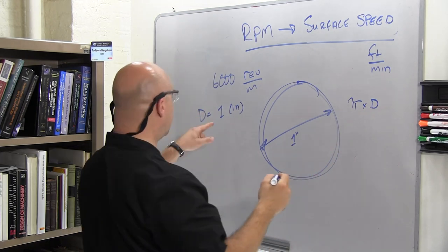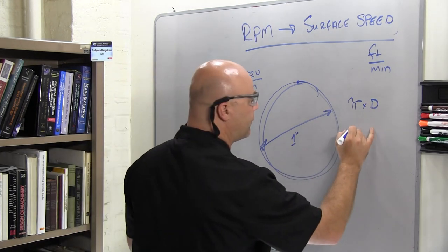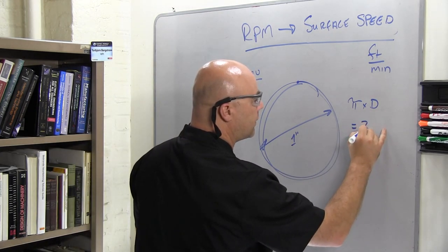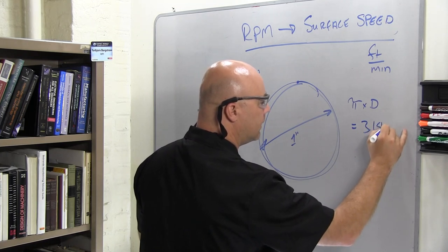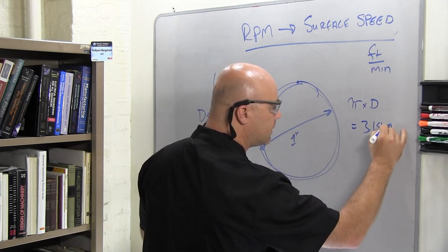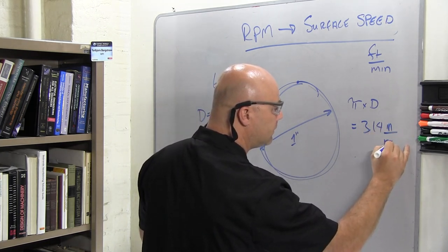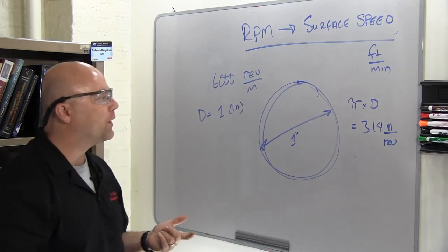And in this case we've got 1 inch diameter, so this is roughly equal to 3.14 inches per revolution. So I've got 3.14 inches per revolution.